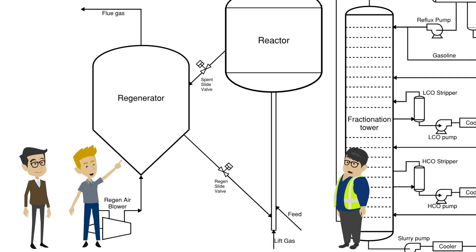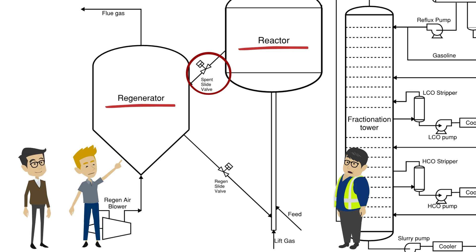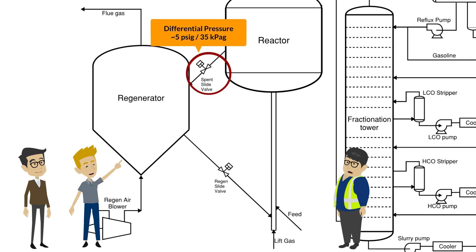The catalyst exits the reactor through the spent slide valve, which maintains the catalyst level above the valve to maintain a barrier between the reactor and regenerator. The spent slide valve also has override controls on differential pressure. It is important to maintain around 5 psig, or 35 kPaG, of differential pressure across the valve.